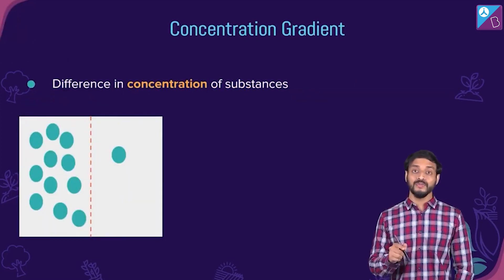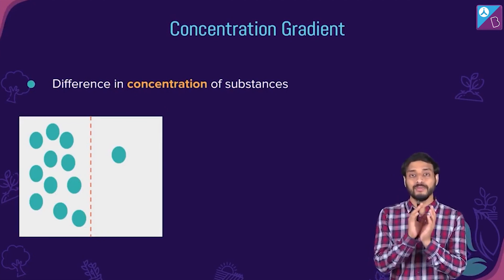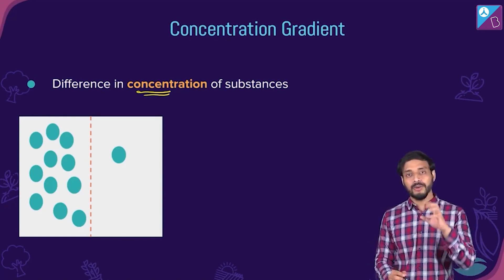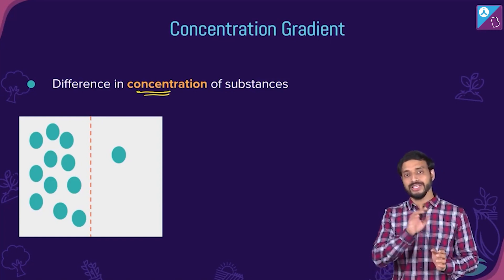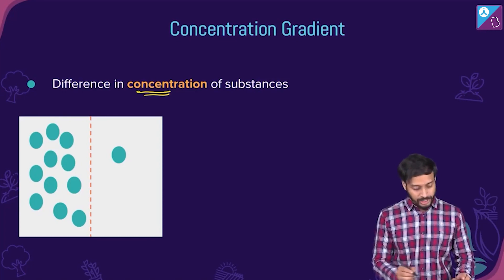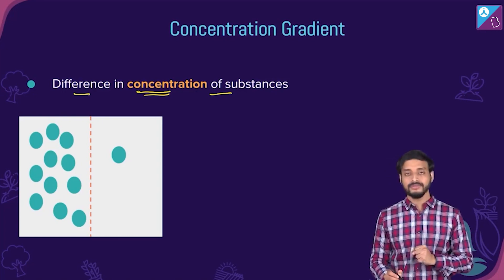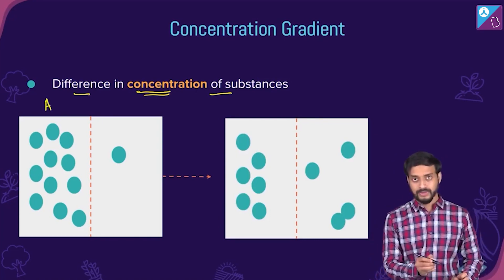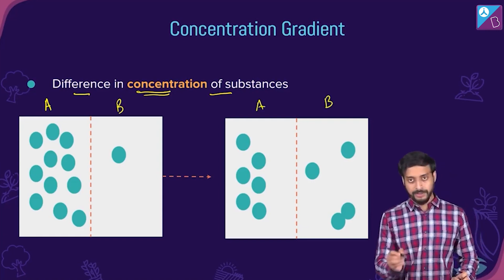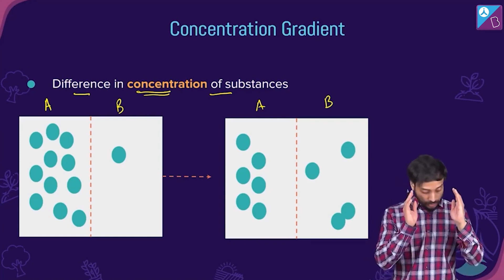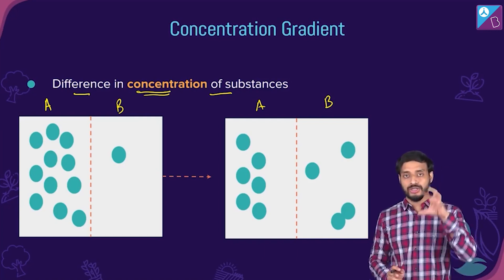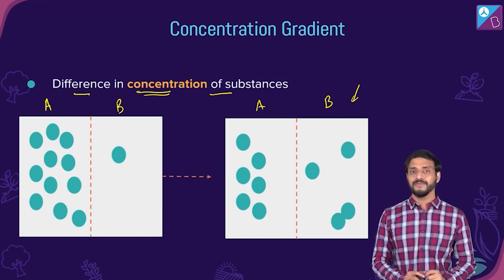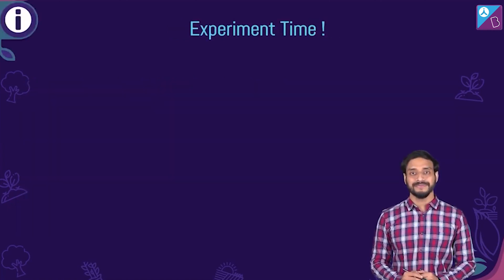Similar things happen with molecules. Molecules also prefer to move from a place where it's very crowded to a place which is less crowded. You know this term — concentration. Molecules try to move from a place of higher concentration to a place of lower concentration. That difference in concentration is called the concentration gradient. The tendency of molecules is to move from high concentration to lower concentration.